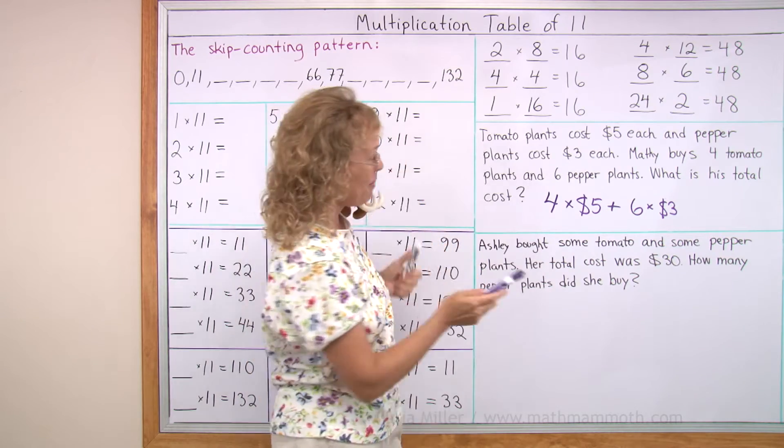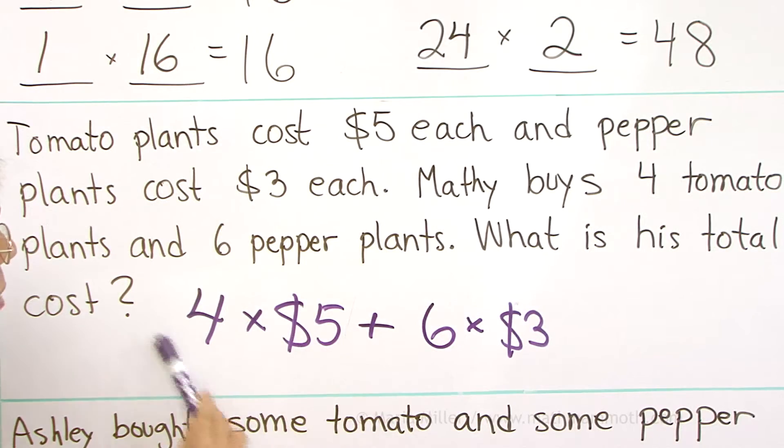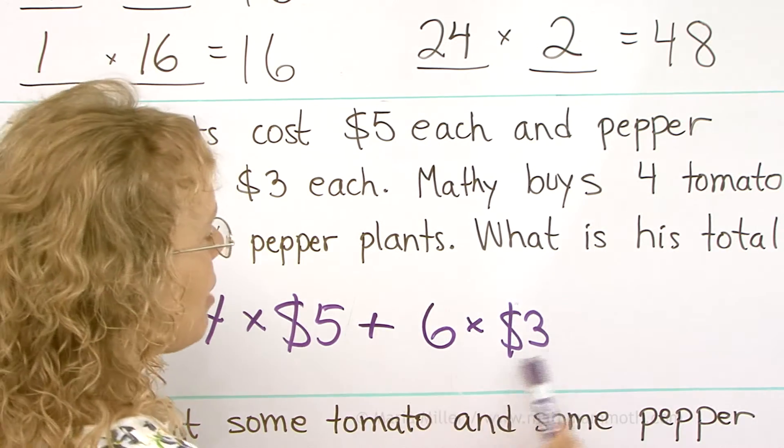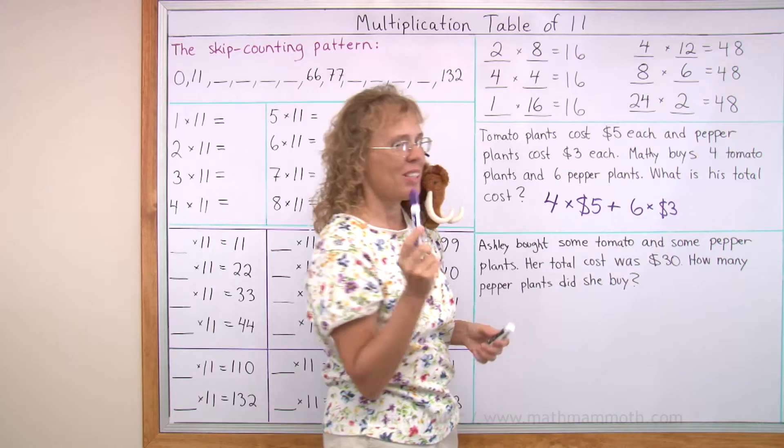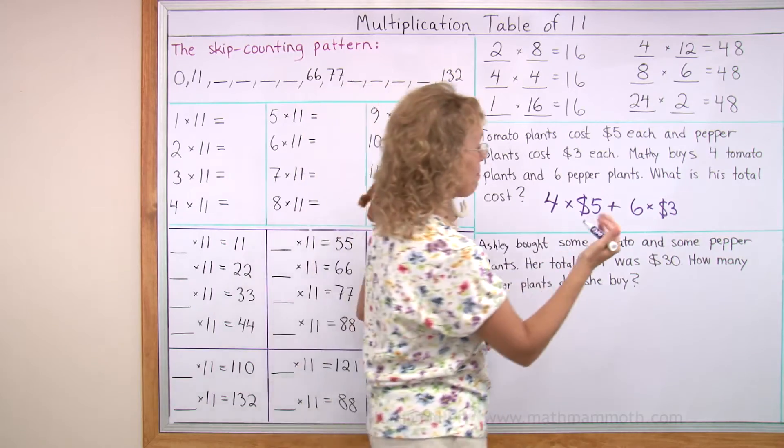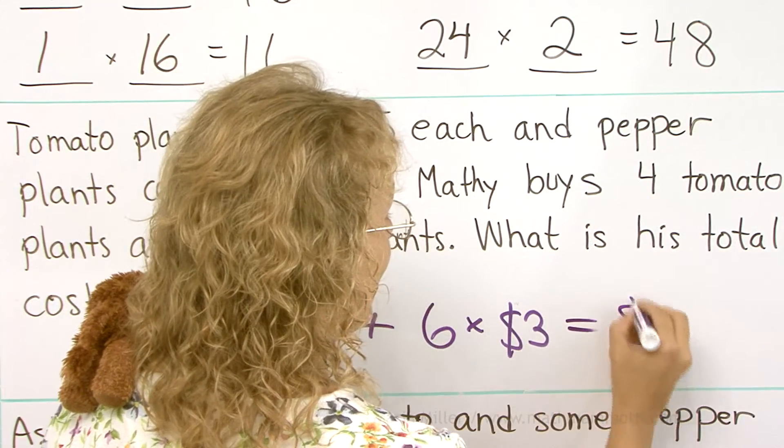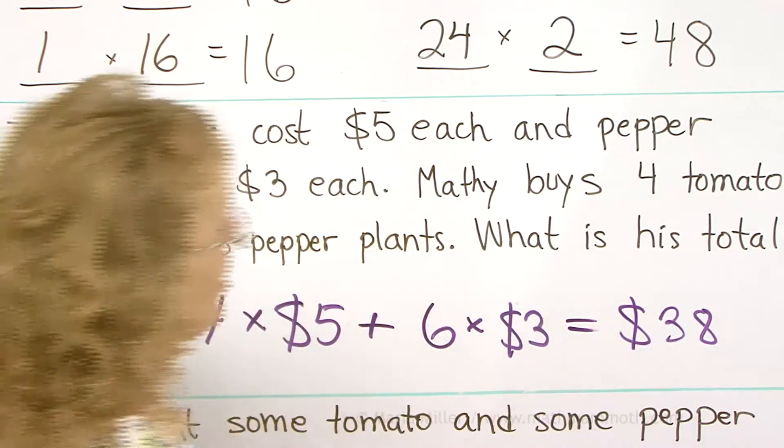And now, how do you solve that one? You multiply. This one is 20. This one is 18. And 20 plus 18? You should get $38.